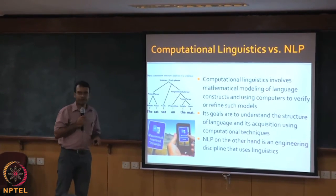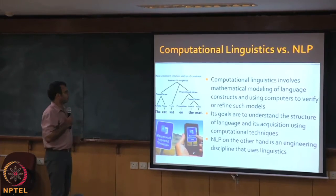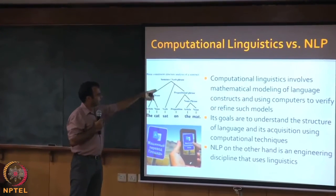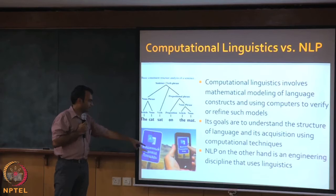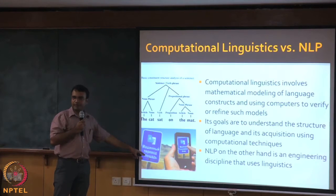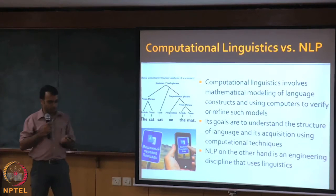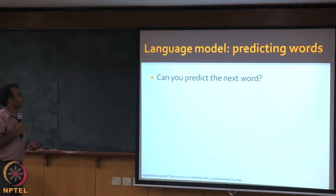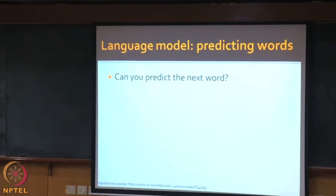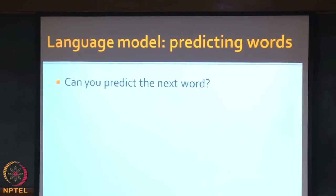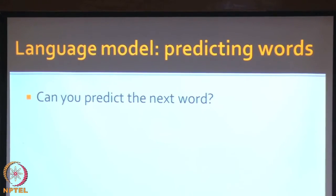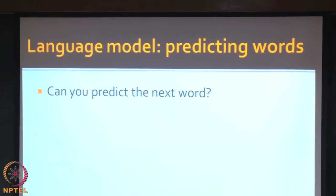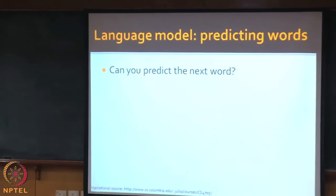NLP, on the other hand, is an engineering discipline. For example, a parse tree will be very familiar to people who come from linguistics, whereas in NLP you are taking some text in a language and translating it into another language. We will start with a discussion on what is a language model and how that is useful in our main topic — spell checkers. But before we get to spell checkers, I want to talk about some computational models of language, mainly coming from the NLP side, not from the computational linguistics side.